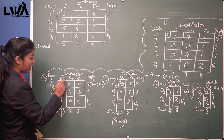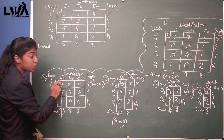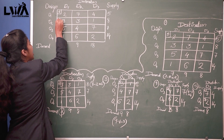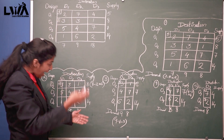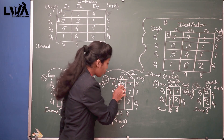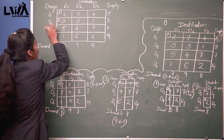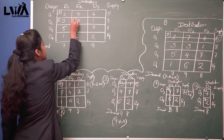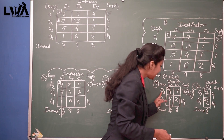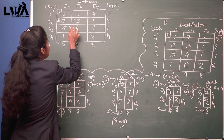In the D1–O1 area there is a 5. In the second step, in the D1–O2 area there is a 2. In the third step, in the D2–O2 area we had a 6. Again, in the D2–O3 area we had a 3.